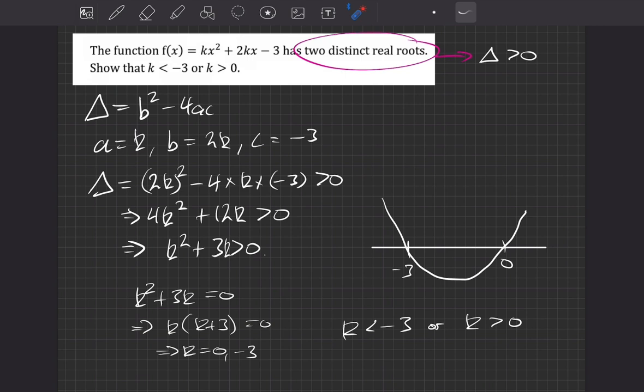If it was inside, then the quadratic would be less than 0, and therefore we would not have two distinct real roots. We ended up showing that k is less than minus 3, or k is positive.